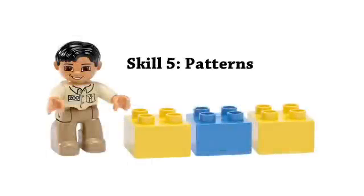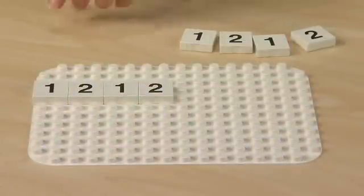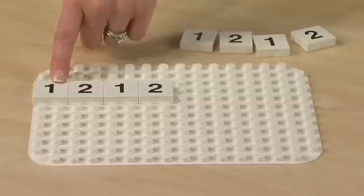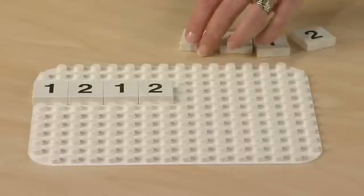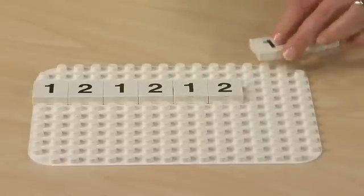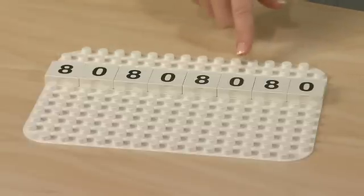Skill 5: Patterns. Students can place number tiles to create a pattern. For example, you may start a pattern for them — one, two, one, two — and students can add tiles to continue it. After students have mastered completing a pattern you created, they can create a pattern of their own.